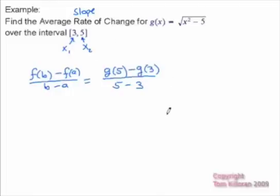So a little side work. Let's go over here. g of 5 is going to equal the square root of basically 5 squared minus 5. 5 squared is 25, that'll bring it down to 20. So g of 5 is going to equal 2 square roots of 5. You might want to practice your simplification of square root of 20.